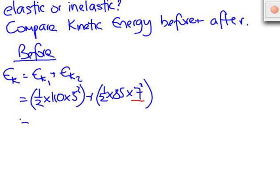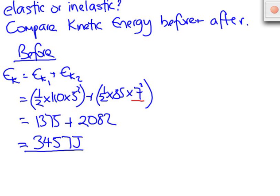Remember that kinetic energy is a scalar, therefore direction is not important. When we work these out we find that we have 1375 joules of energy for the forward and 2082 joules of energy for the back, giving a total kinetic energy before the collision of 3457 joules.